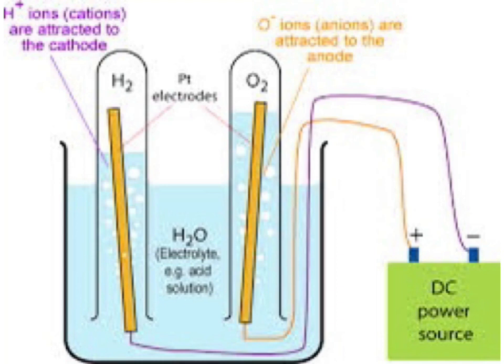For this activity, we need to take out two carbon rods from two discarded dry cells. Carefully wrap copper wires around the metal caps of the carbon rods and join them to a battery through a switch. Take 250 ml of water in a beaker and add a few drops of dilute sulfuric acid to make it more conducting. Now immerse the carbon rods in the acidified water in the beaker and pass electric current by closing the switch.